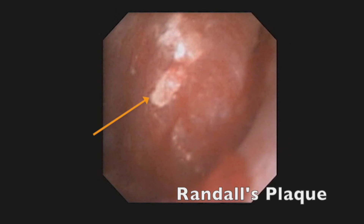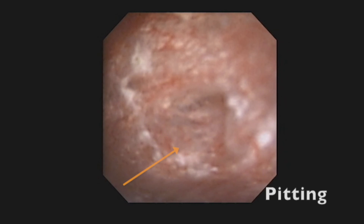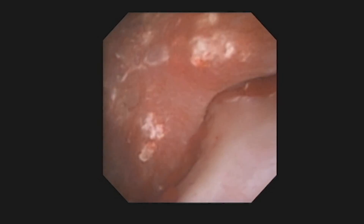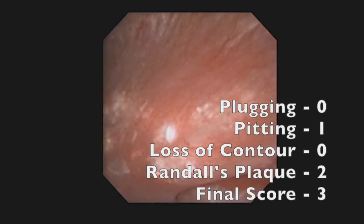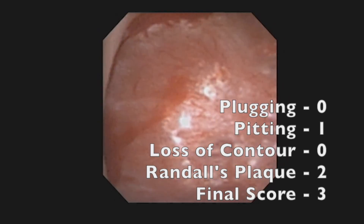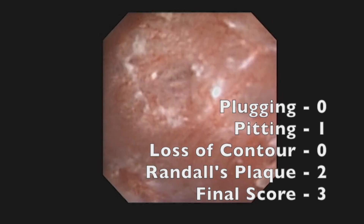In this final example, abundant Randall's plaque can be seen. There is a large superficial pit in the papilla, but less than 25% of the entire papillary surface is involved. Final score is 3: 0 for plugging, 1 for pitting, 0 for loss of contour, and 2 for Randall's plaque.